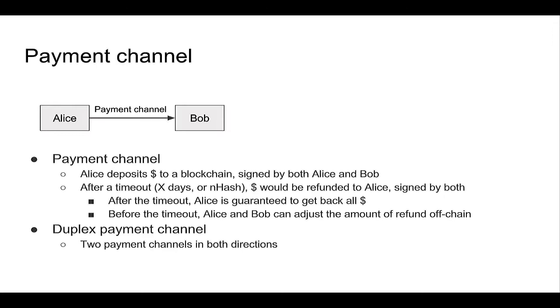Say Alice establishes a payment channel with Bob. Alice deposits some amount of money to the blockchain, signed by both Alice and Bob. They also sign another transaction specifying that after a timeout — which can be some days or some number of blocks — the deposit can be refunded to Alice. With these two transactions, after the timeout Alice is guaranteed to get all the money back, and before the timeout, Alice and Bob can adjust the amount of refund off-chain. You can also open a duplex two-way payment channel.